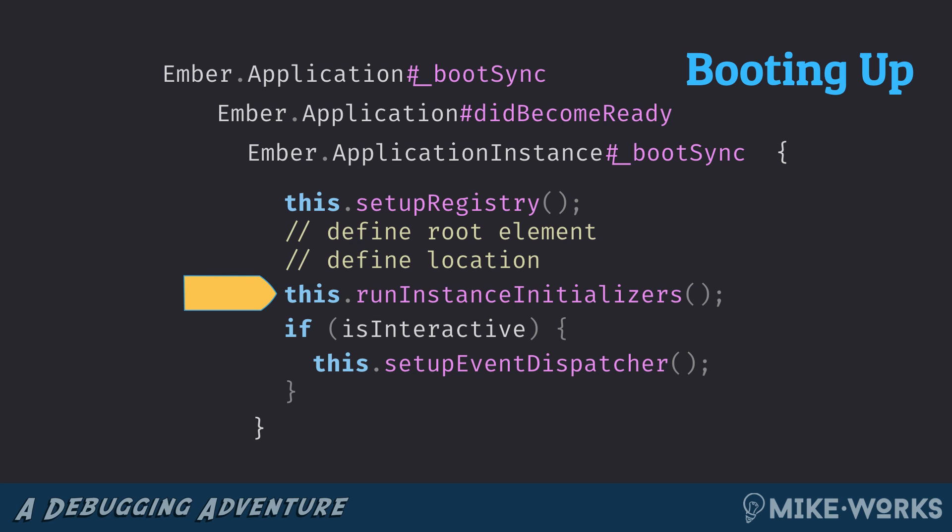After we're done running these instance initializers, we're going to — only if we're in interactive mode — set up our event dispatcher. An example of not being in interactive mode would be if you are server-side rendering: we don't need to listen for clicks and keystroke events if we are rendering our Ember app in Node.js. There is no user there to interact with it, so we can opt out of the overhead required to listen for and propagate those events.